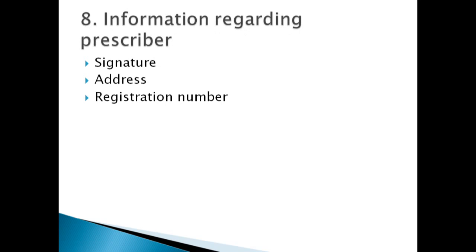The next part is the signature, address, and registration number — that is, the information regarding the prescriber. At the end of the prescription, this information is generally written. There must be a signature of the prescriber with ink, which authenticates the prescription. Along with the signature, there must be the address and registration number of the prescriber as well, so that it can be traced and for record purposes, it will be very helpful.